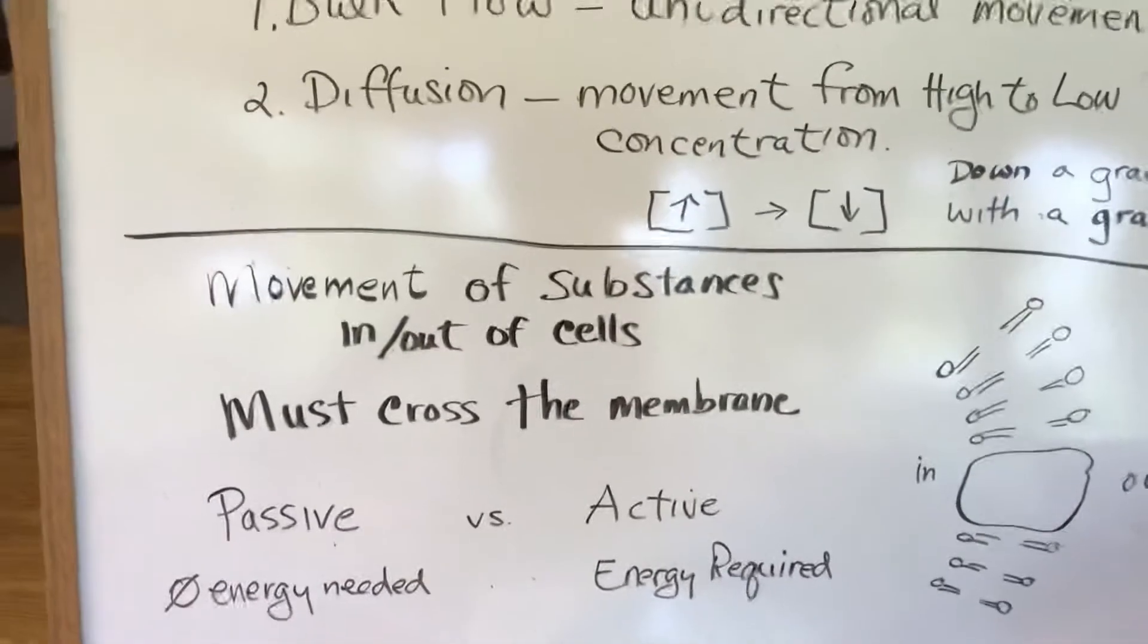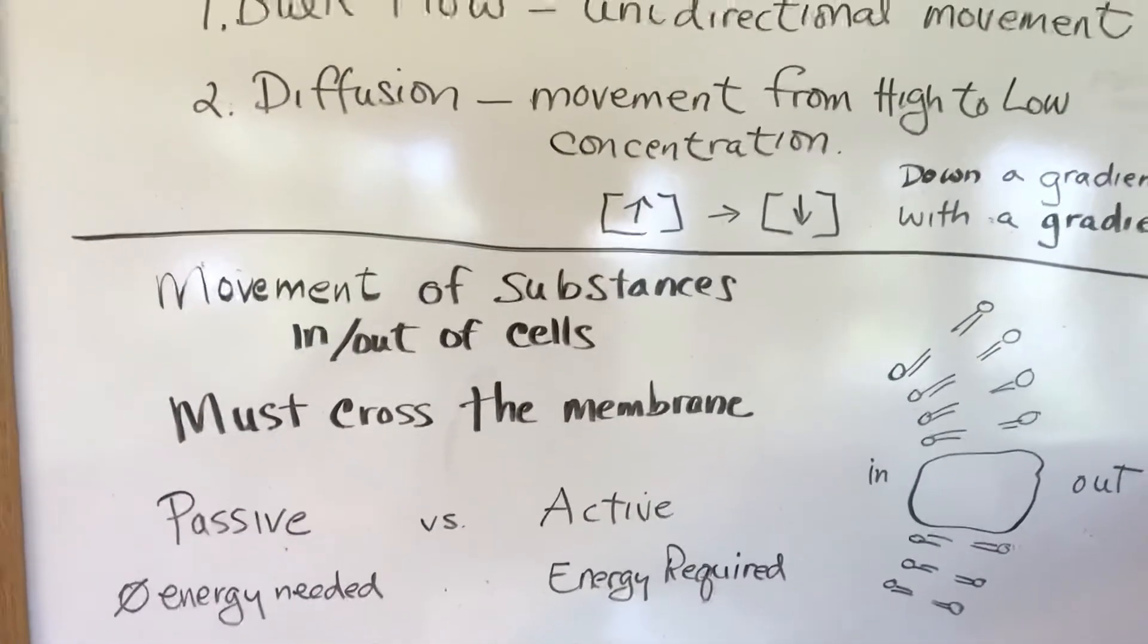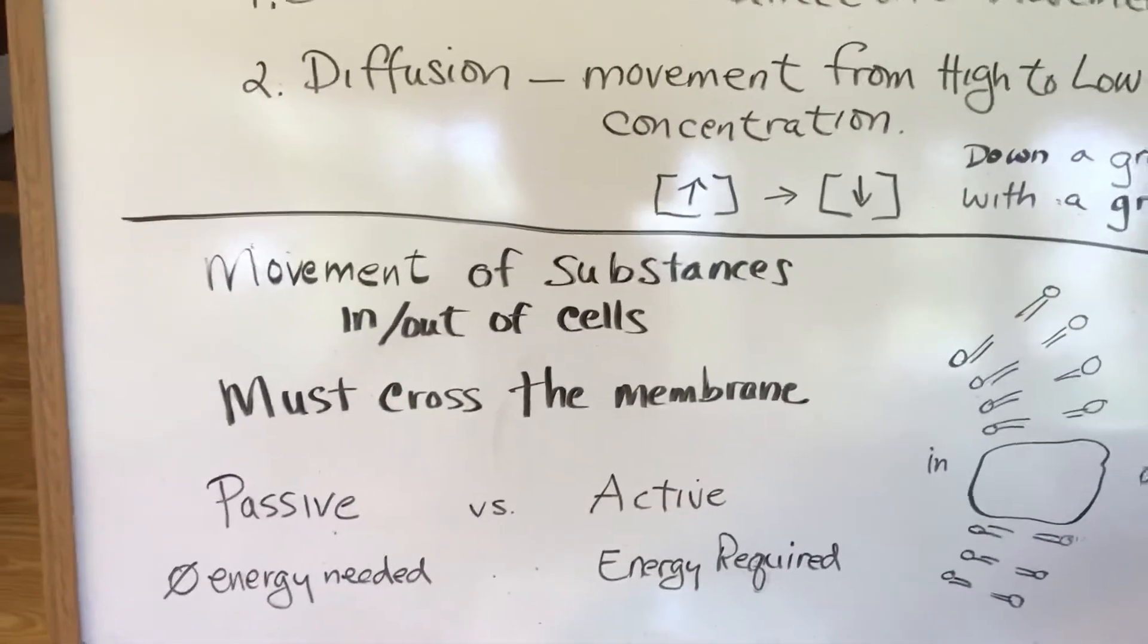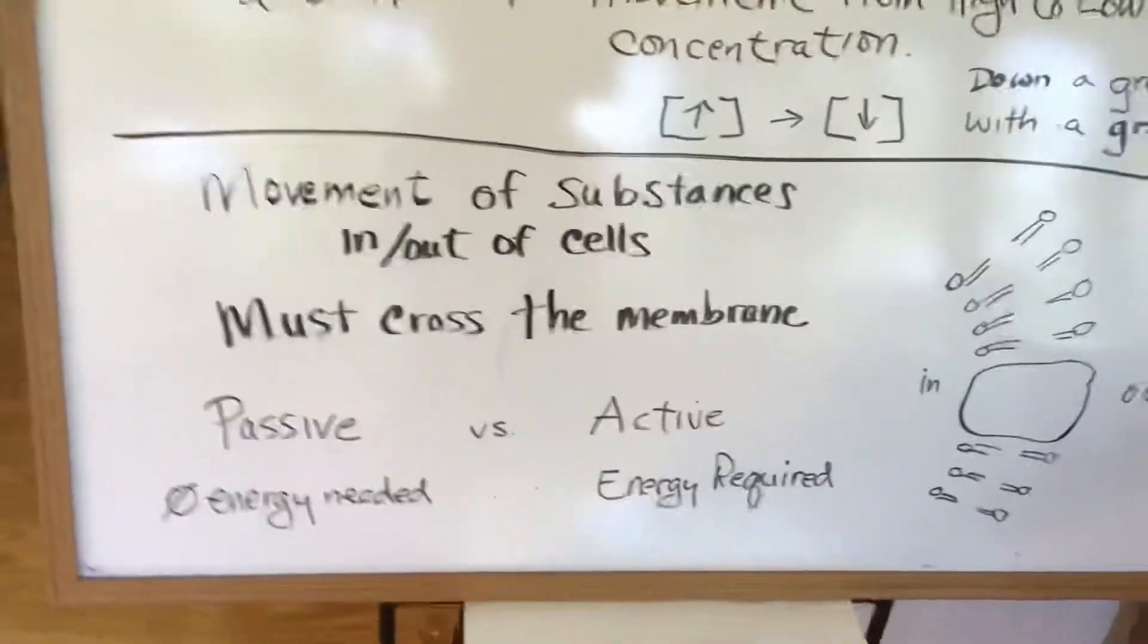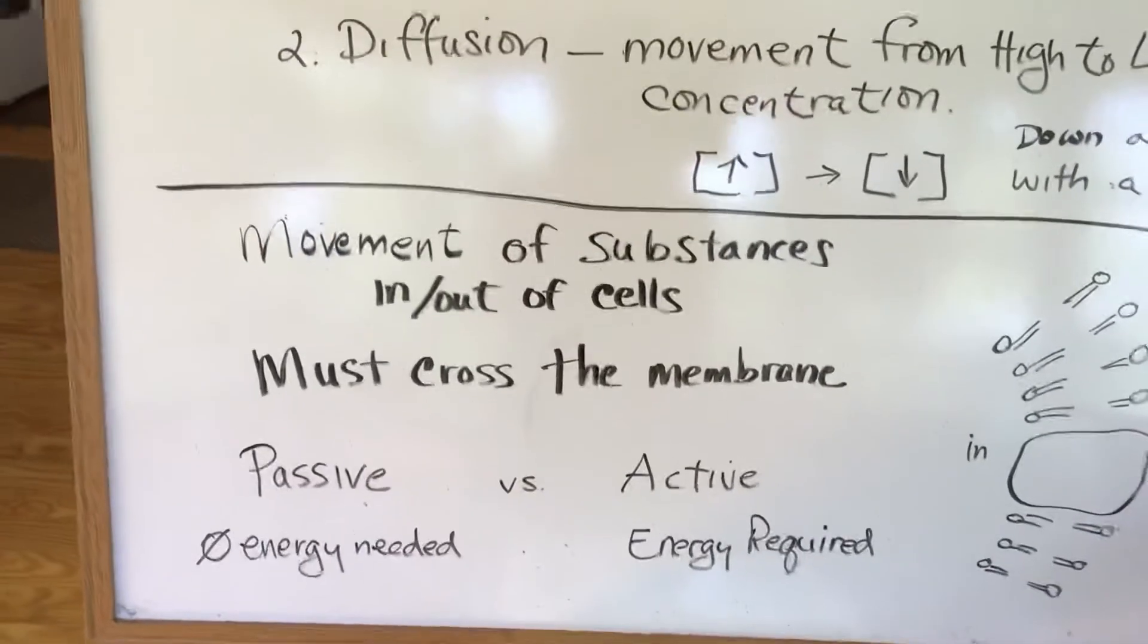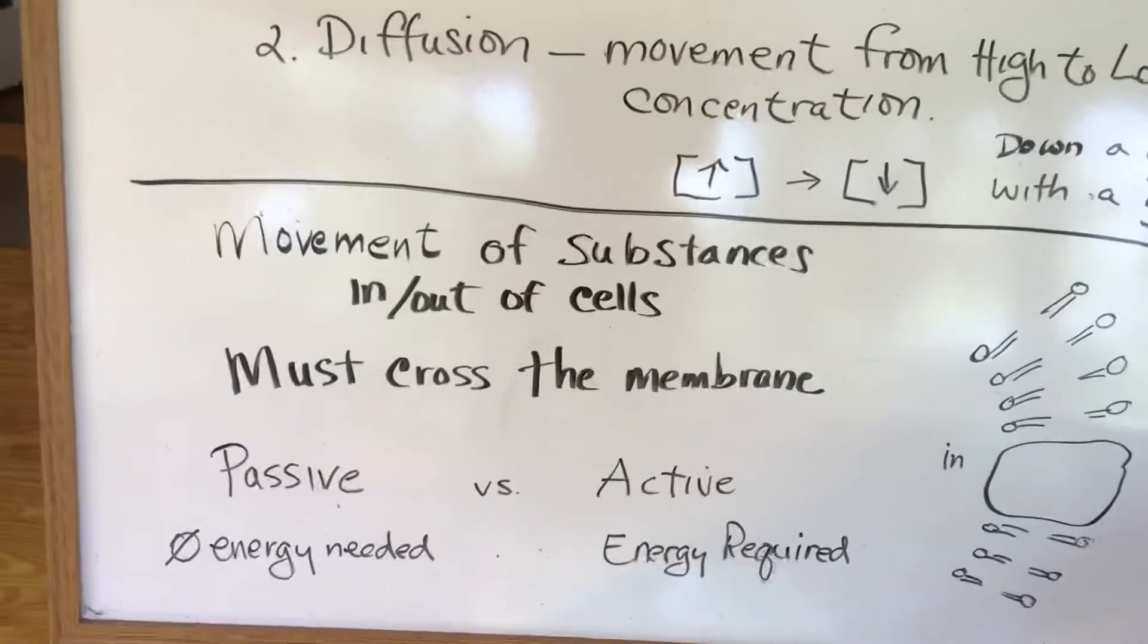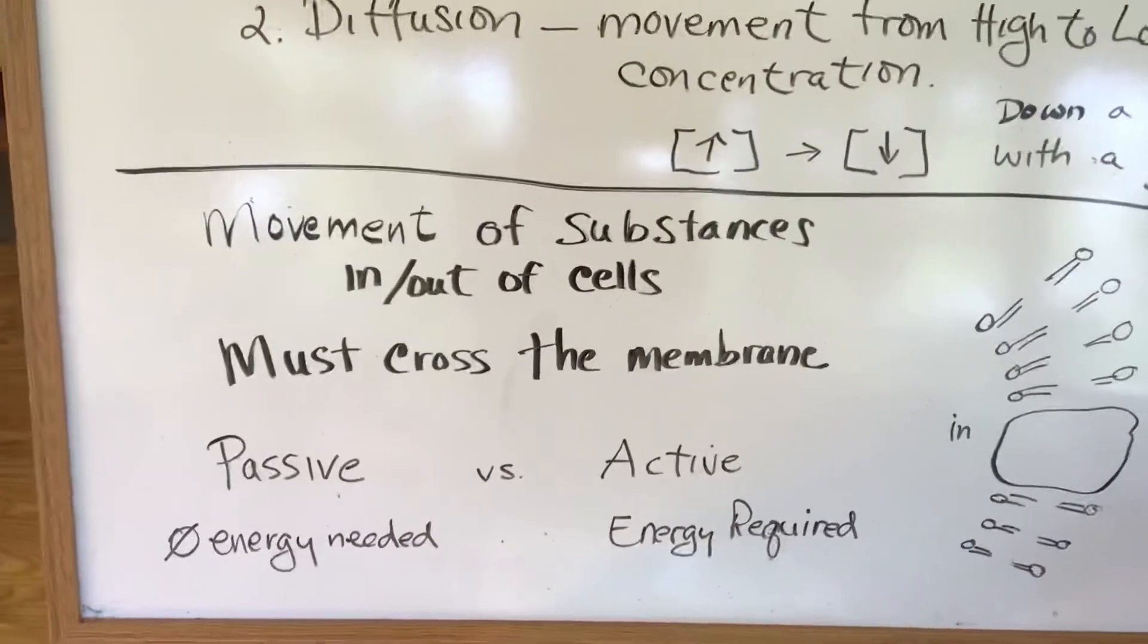Active transport requires energy. And this is because something is happening. Either it's going against the gradient or it has to move in a part of the cell that you're not able to enter or something like that. So we'll talk about those different kinds of movements. It also depends on the size of the molecule and such. We'll talk all about these different processes.